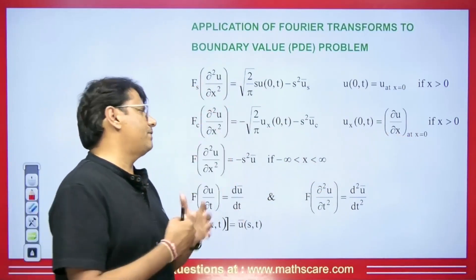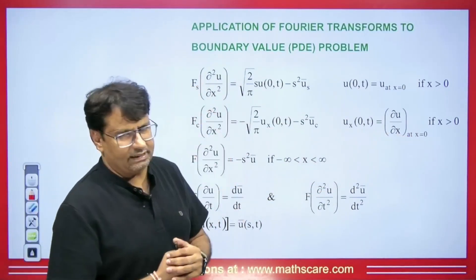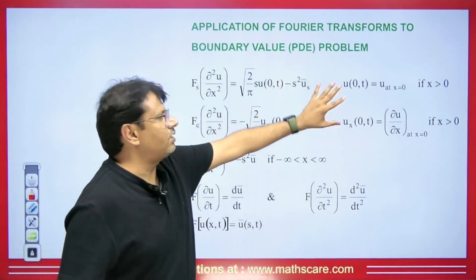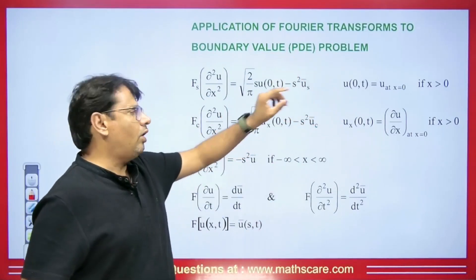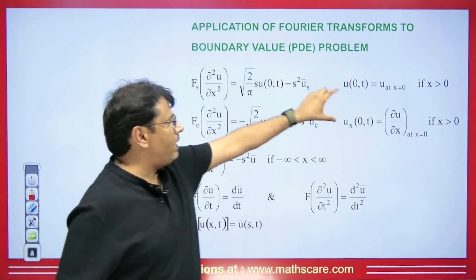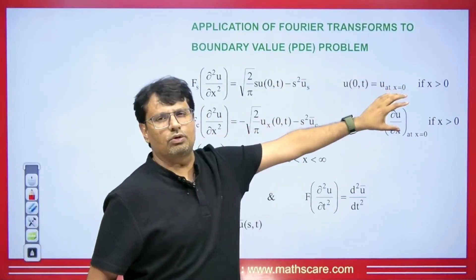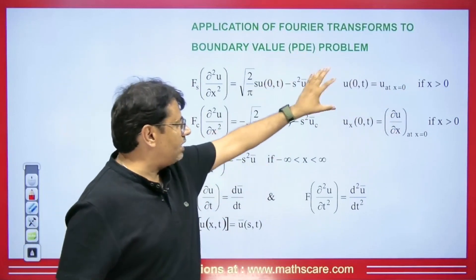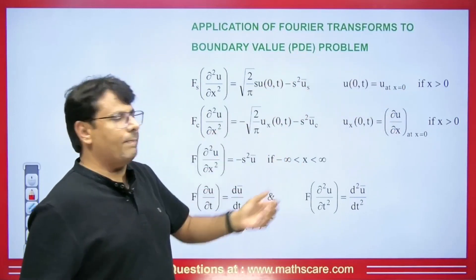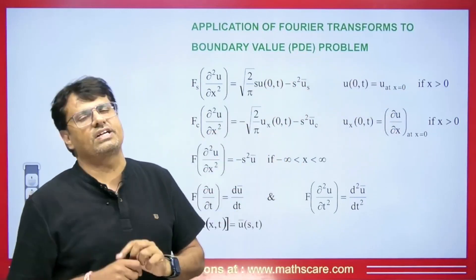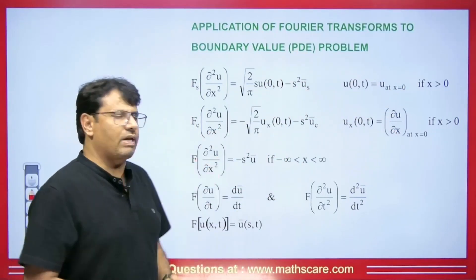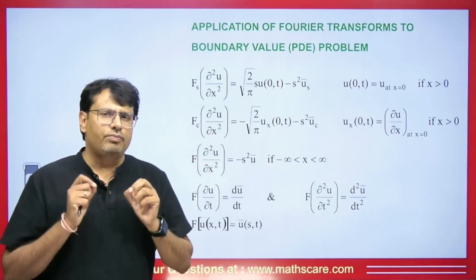If you haven't watched those videos, you can watch them via the i-button. If we don't have these two conditions given — and here both of them have x greater than 0 — and if x is from minus infinity to infinity, then in that case we use the Fourier transform.